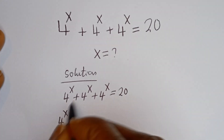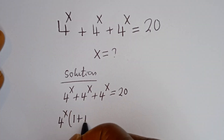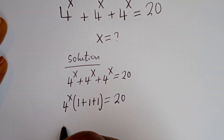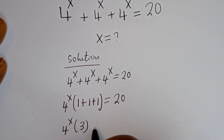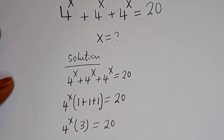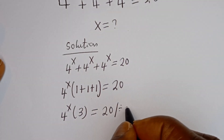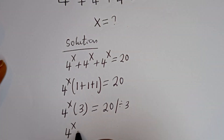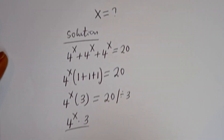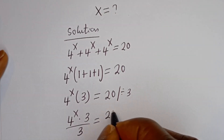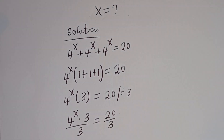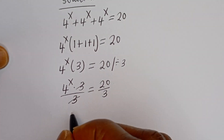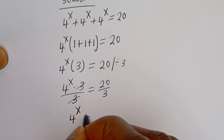4 to the power of s, bracket: this divided by this one, plus this divided by this one, plus this divided by this one, is equal to 20. This gives 4 to the power of s bracket 3, which is equal to 20. Now let's divide both sides by 3. So this is 4 to the power of s multiplied by 3, divided by 3, is equal to 20 divided by 3. This will cancel, so 4 to the power of s is equal to 20 over 3.